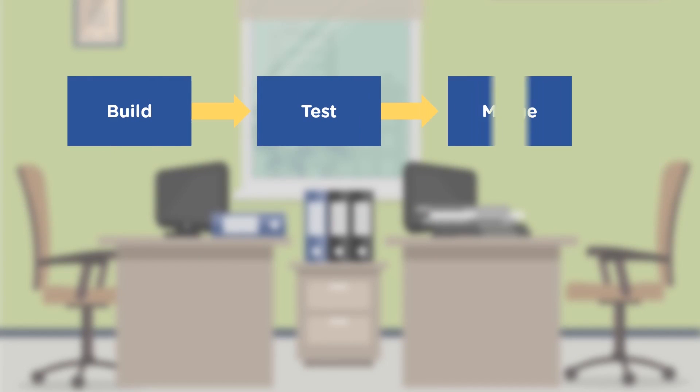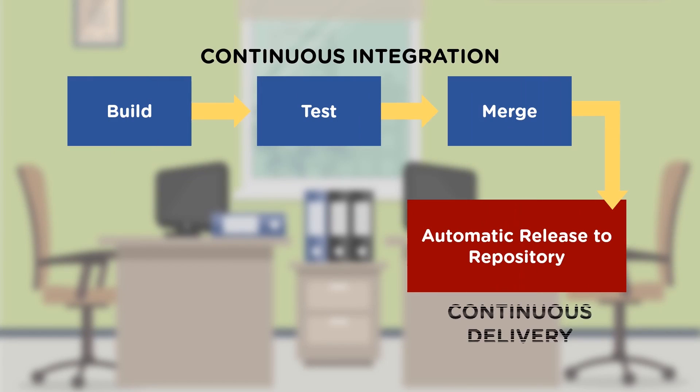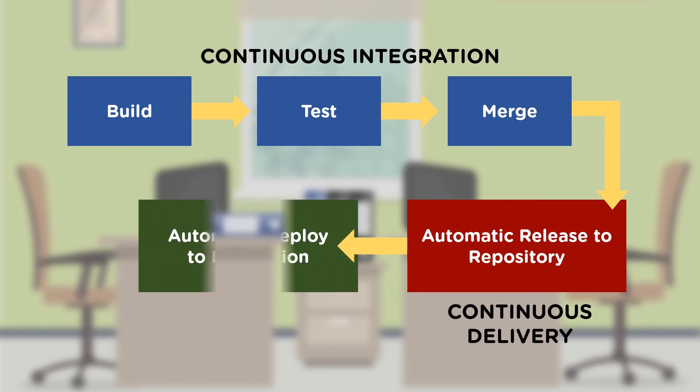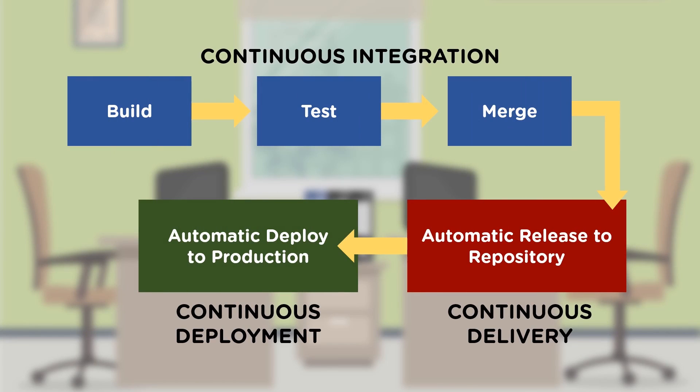Let's talk about these concepts one by one. Continuous integration comes first in the process, followed by continuous delivery and deployment. The main tasks performed in continuous integration are build automation, test execution, and merging of various branches.